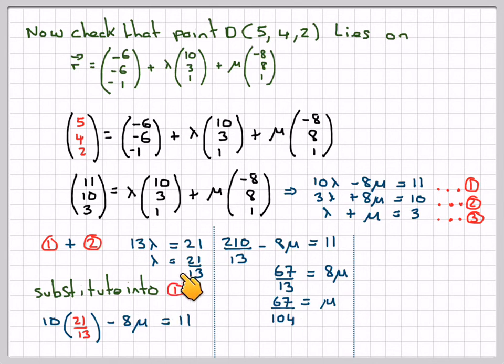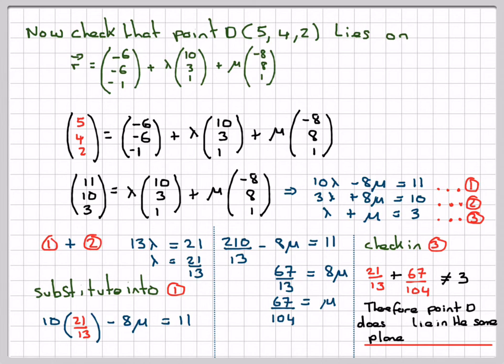Now substitute these two values back into equation 3. Check in equation 3: we're going to have 21/13 plus 67/104, and that is not equal to 3. Therefore, point D does not lie in the same plane.